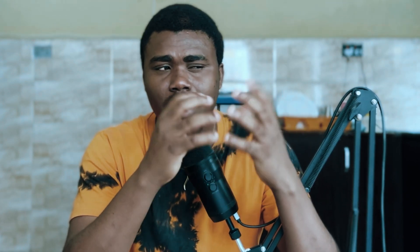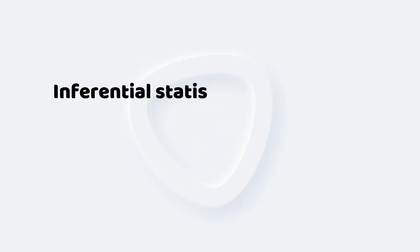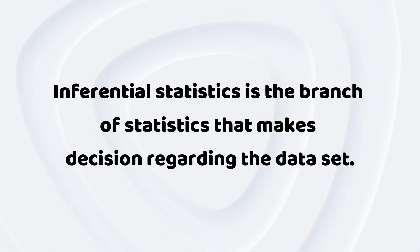When we leave the realm of descriptive statistics, we move into inferential statistics. Inferential statistics is the decision maker — this is the branch of statistics where you literally make conclusions about your data set. This is where you decide that a certain outcome should happen.